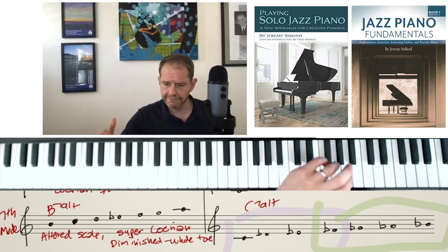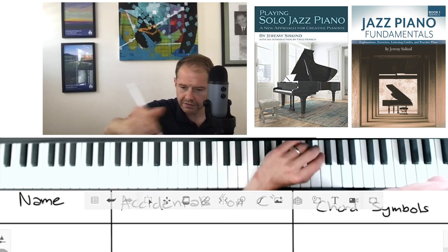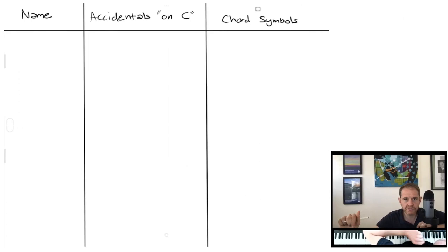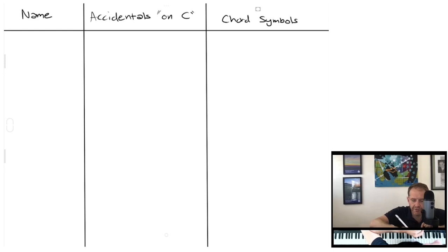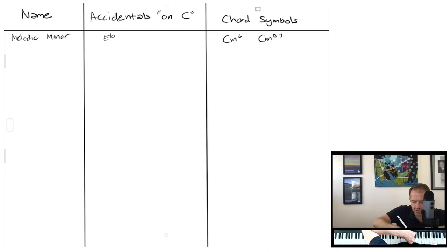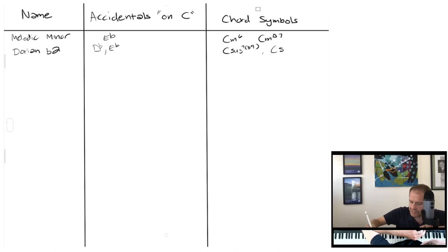Now here's a quick chart summary. Mode one, melodic minor: starting on C, has E flat; chord symbols C minor six or C minor major seven. Mode two, Dorian flat two: has D flat and E flat; chord symbols C sus flat nine or C sus 13 flat nine.